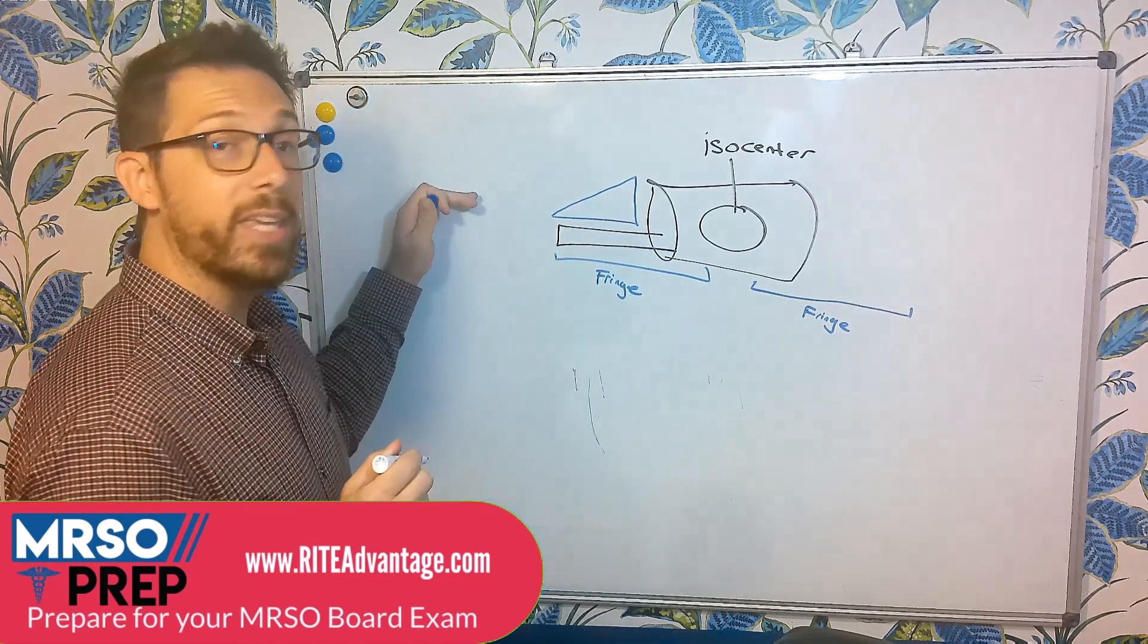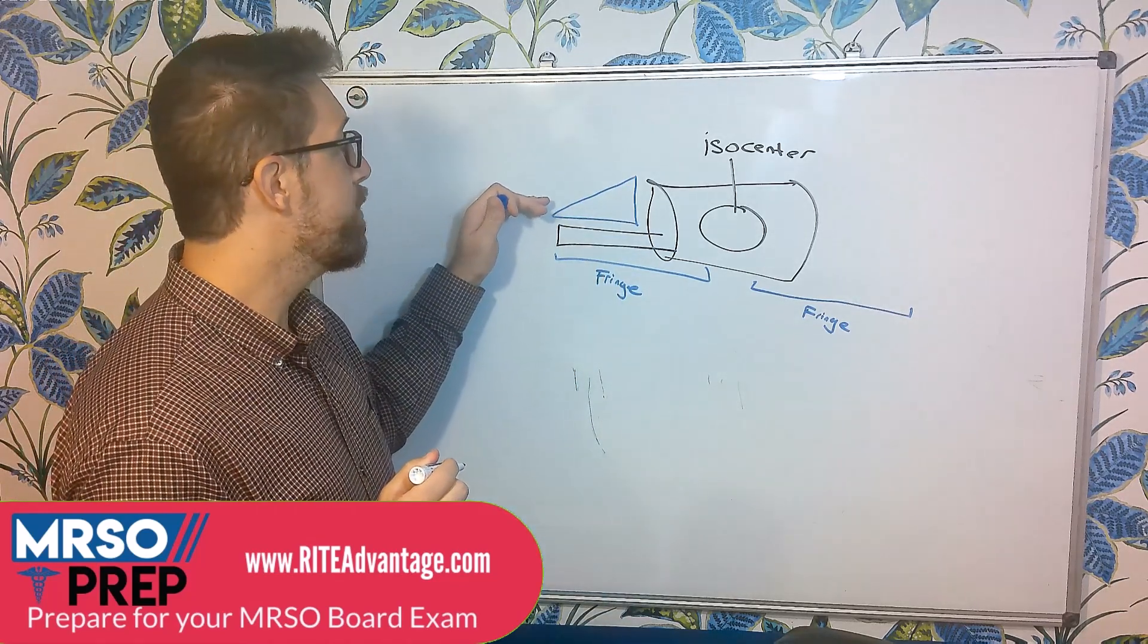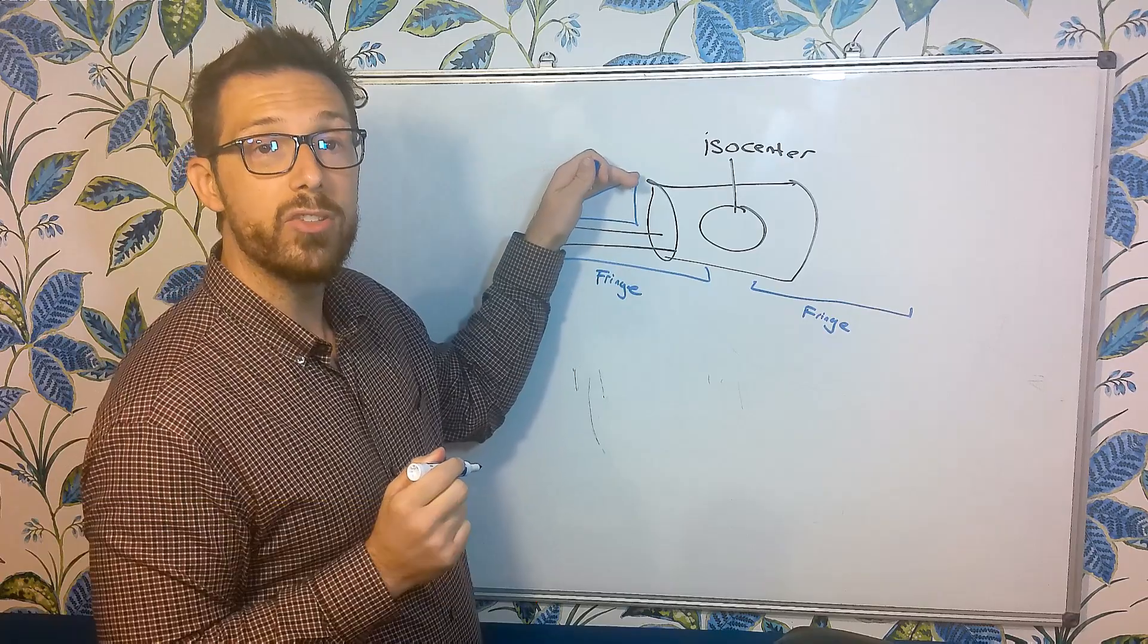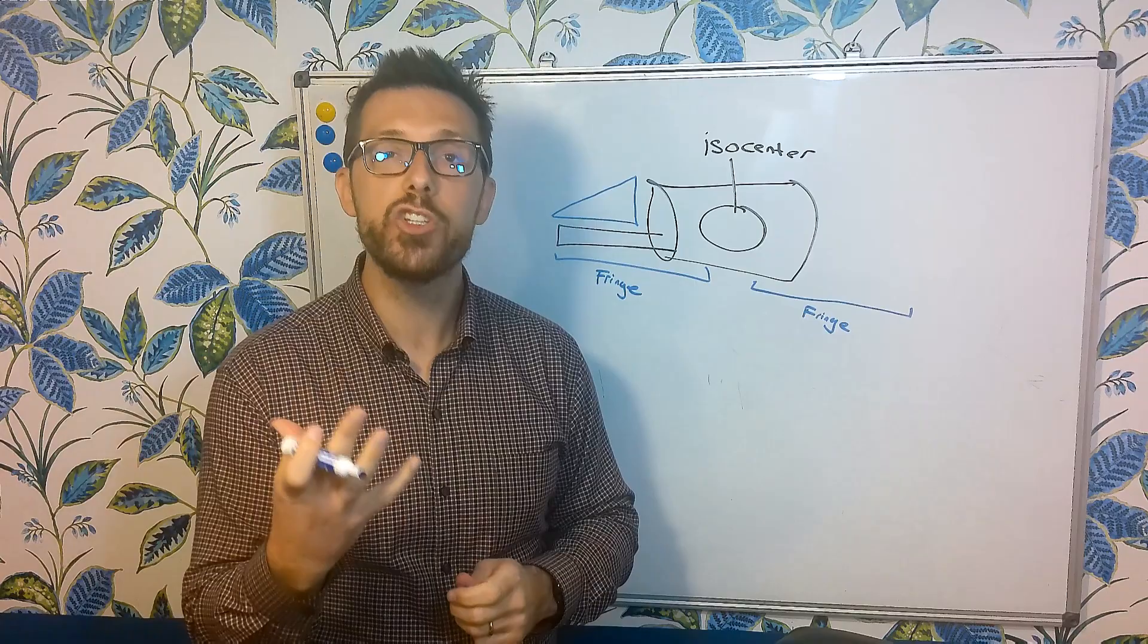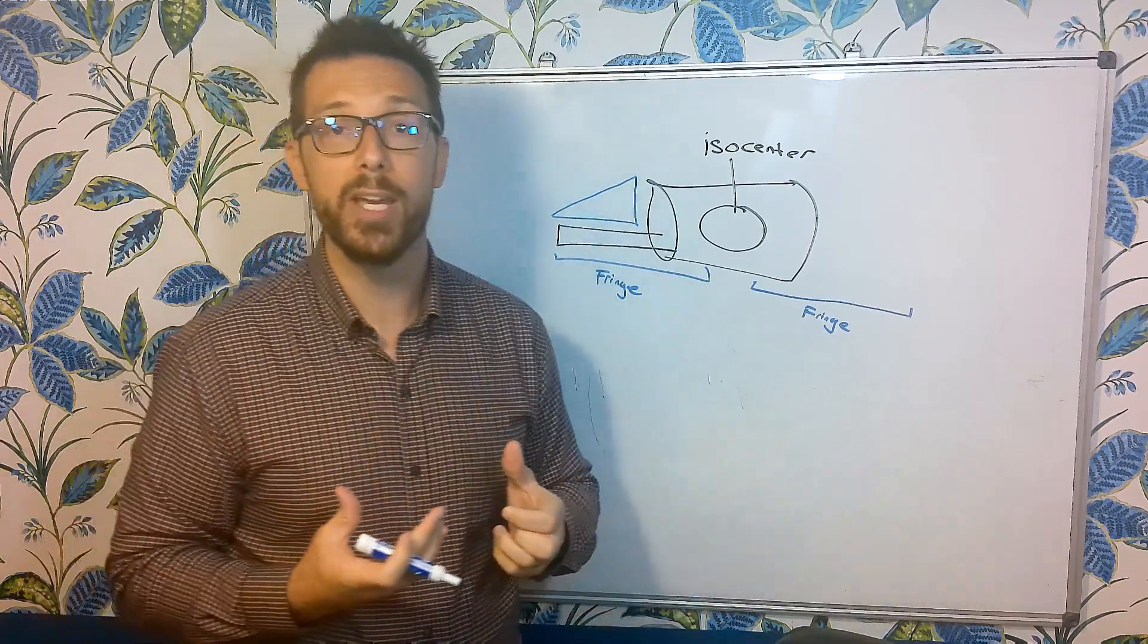So as we get closer to this MRI unit, this magnetic field gets stronger and stronger and stronger until we get to the opening of the bore. And this is actually what draws these ferrous objects in.